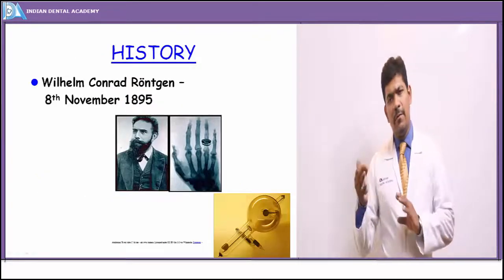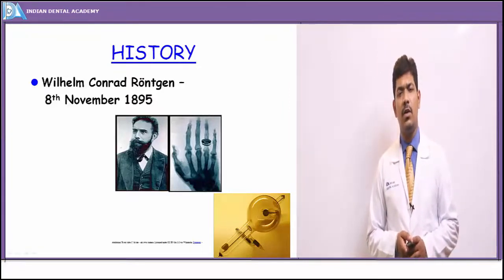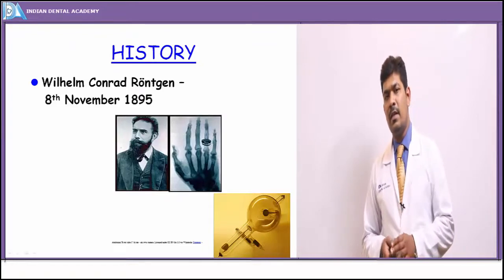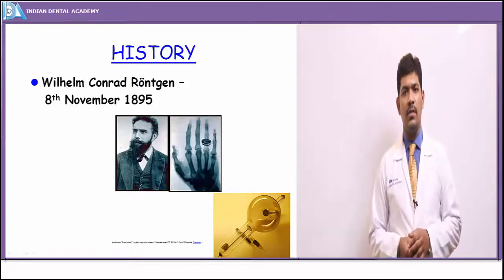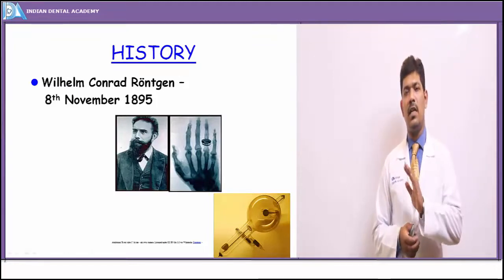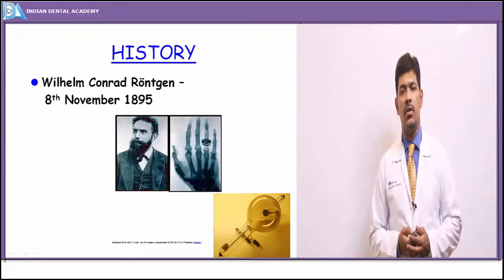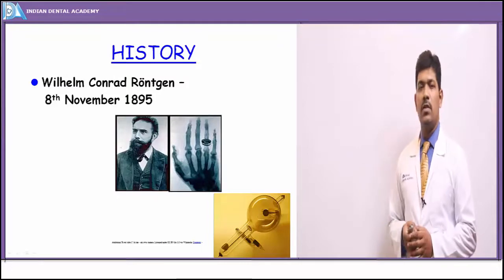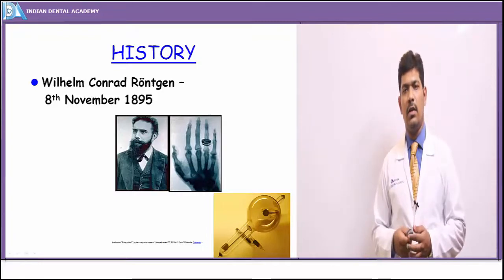Before we move on to the main subject, a brief history. We all know that x-rays were first discovered by William Röntgen in 1895. The first x-ray film was taken of his wife's hand, and what he inferred was that these invisible rays — which he named x-rays — could pass through less dense objects, whereas dense objects like bones or metals completely stop their propagation.